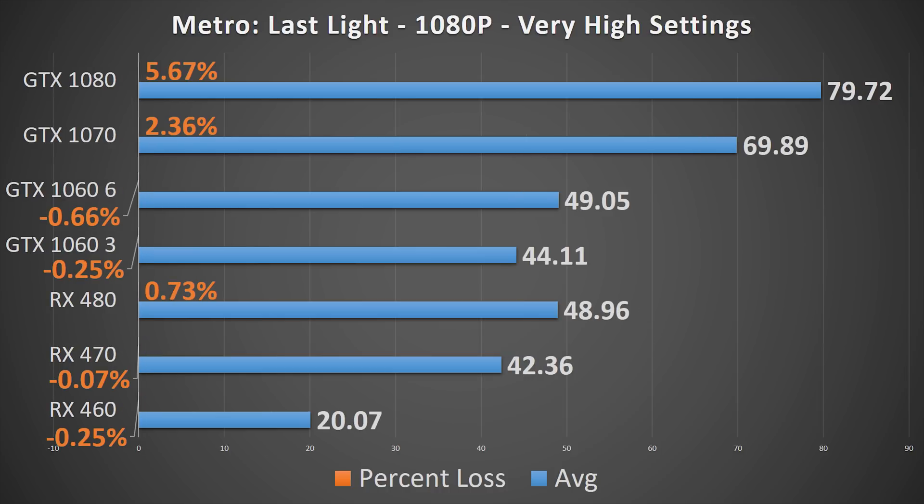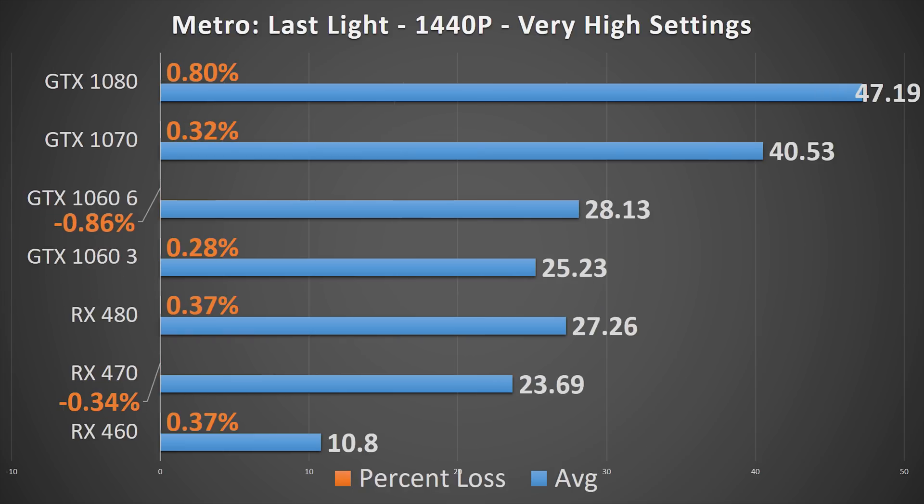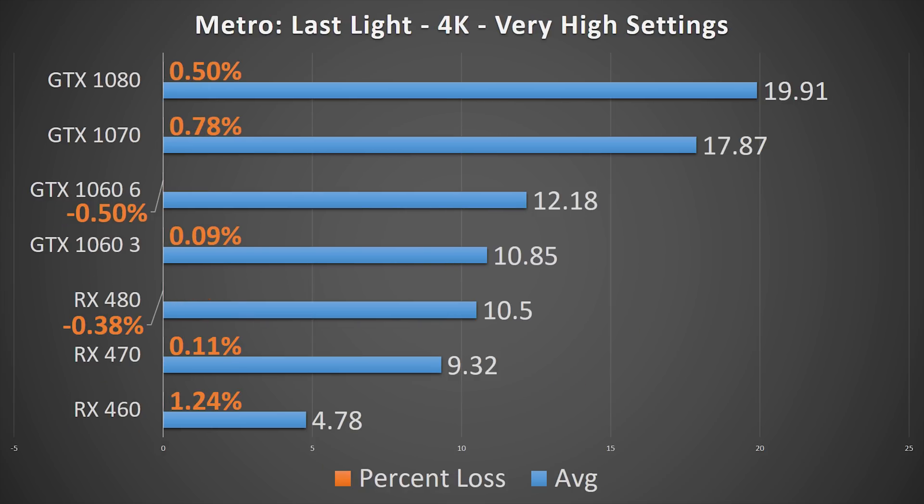Metro Last Light appears to make decent use of the extra threads on the i3, with only the GTX 1080 seeing a mentionable loss at 1080p. At 1440p and 4K, the GPUs are able to stretch their legs without consequence.